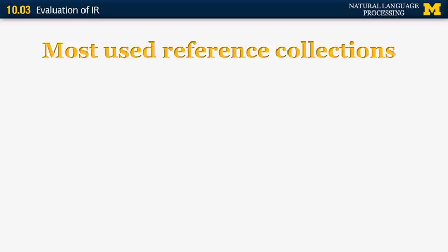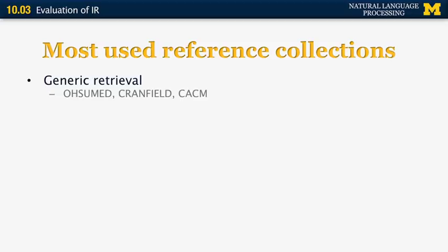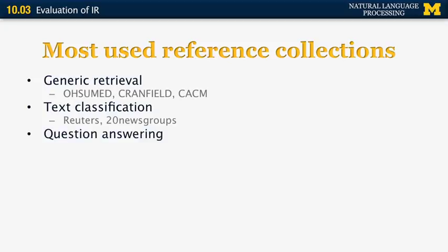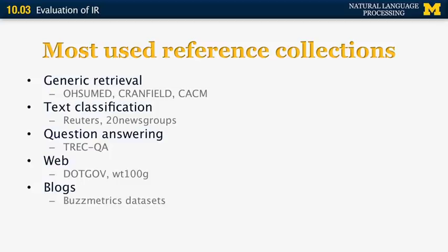In addition to the TREC evaluation corpus, other reference collections have been used for information retrieval. For generic retrieval, these include OHSU Med (a collection of medical documents), Cranfield, and CACM (manuals and scientific papers). For text classification, people use the Reuters collection and the 20 Newsgroups collection. For question answering, they use the TREC question answering collection. For web retrieval, they use .gov or WT100G — the first being a crawl of the entire .gov domain, the second a 100-gigabyte web corpus. For blog purposes, people use many different datasets including the Buzz Metrics datasets.